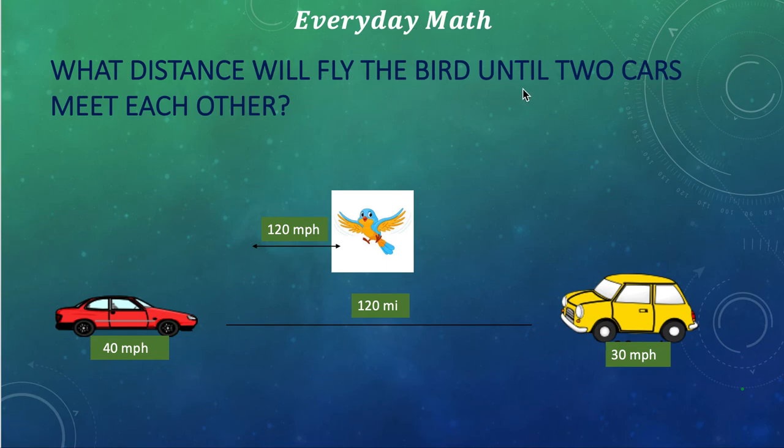What distance will fly the bird until two cars meet each other? First of all, the speed or velocity of the bird that flies is 120 miles per hour, the red car is 40 miles per hour, the yellow car is 30 miles per hour, and the distance between two cars is 120 miles.